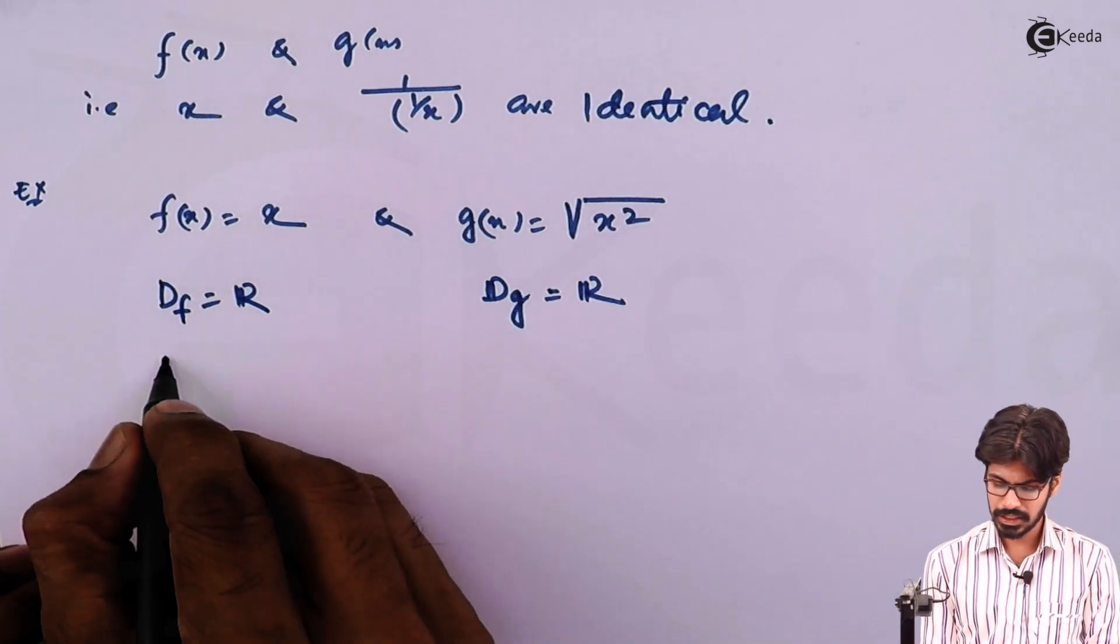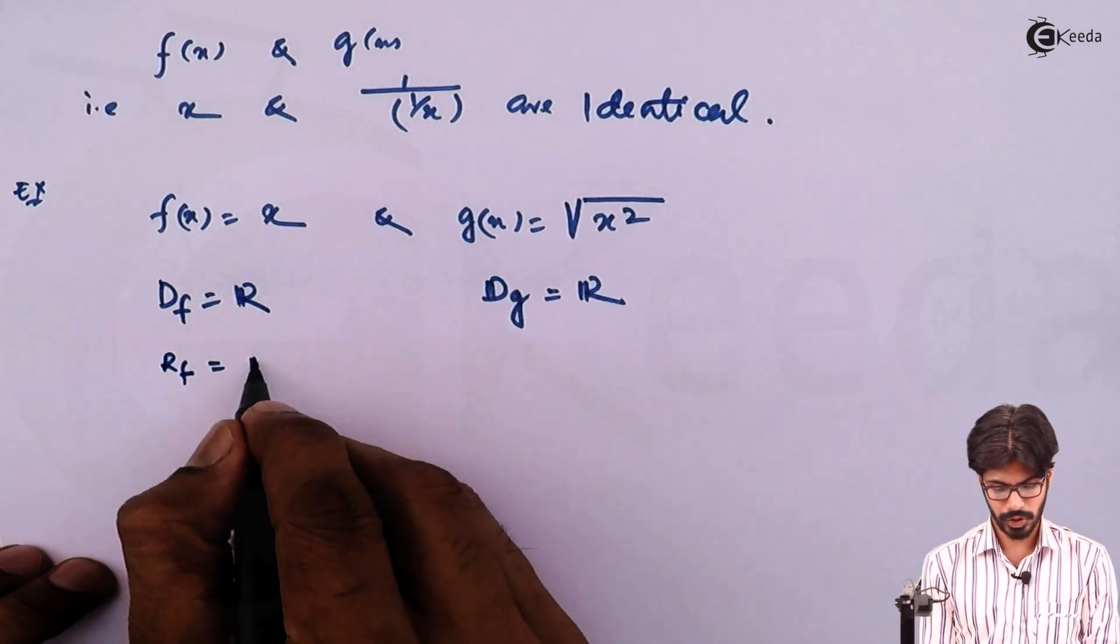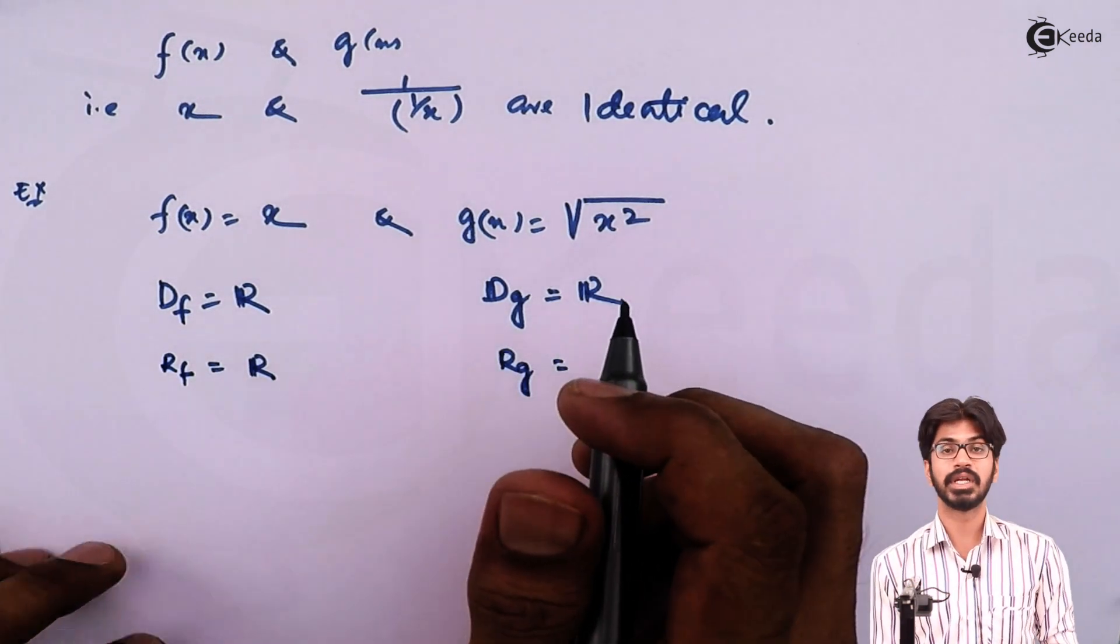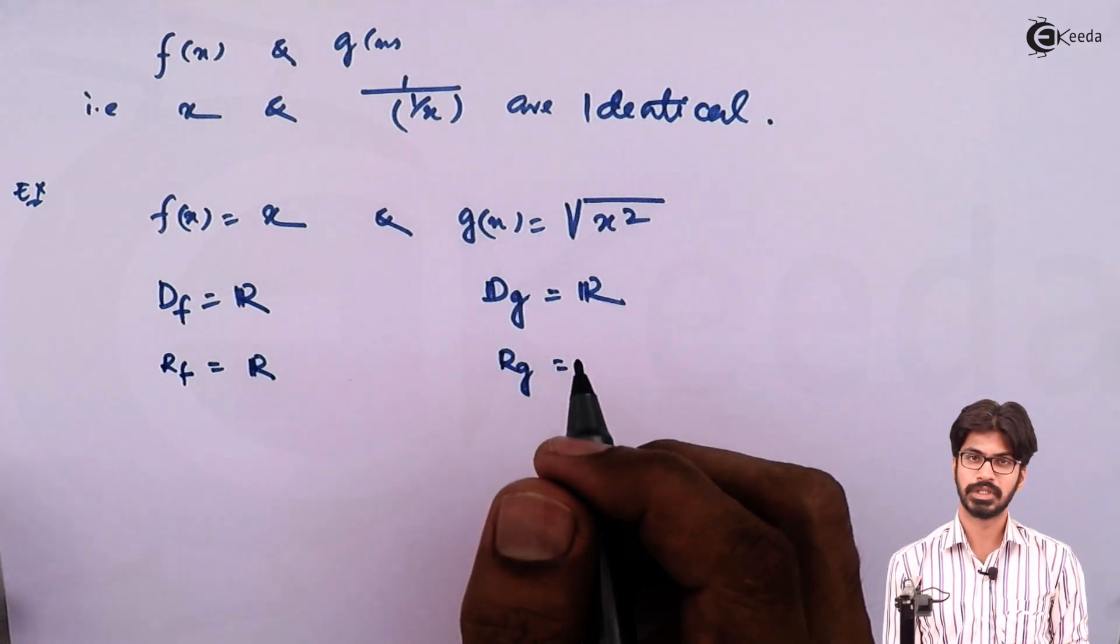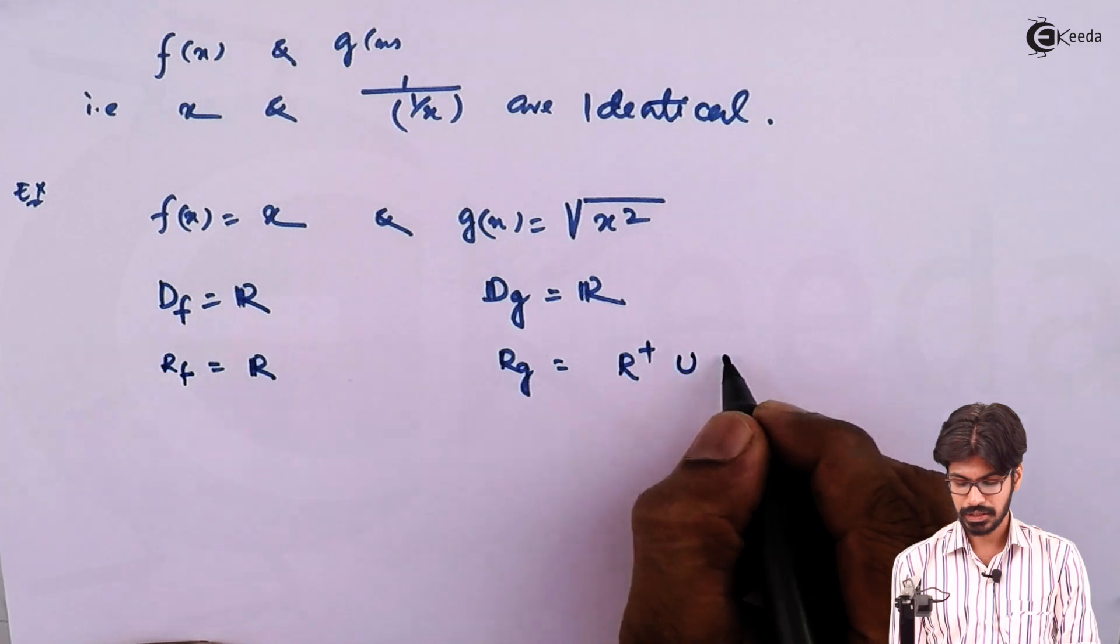Now consider the range of these two functions. Range of f is whole of R. Range of g here it will give you only positive values, that is R plus union 0.